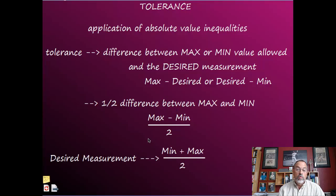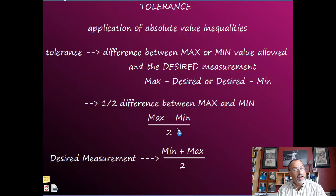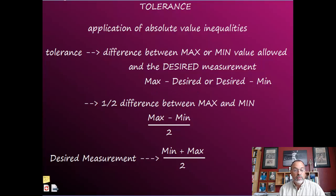To figure out what the desired measurement should be, you take the minimum value that is given, add it to the maximum, and divide by two — that gives you the desired measurement. So in summary: max minus desired gives you tolerance; desired minus minimum gives you tolerance; max minus min divided by two gives you tolerance; and min plus max divided by two gives you the desired measurement.